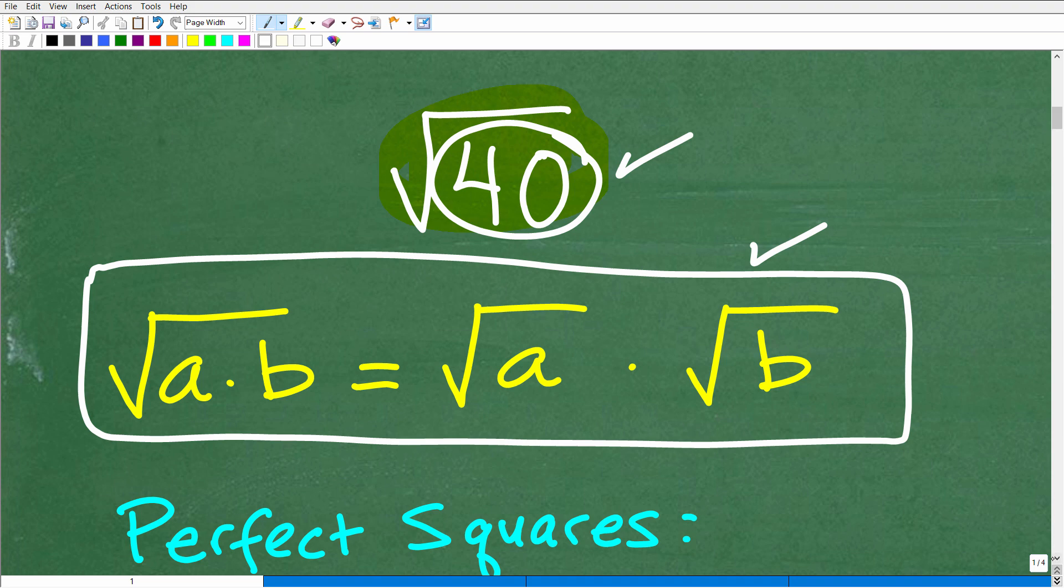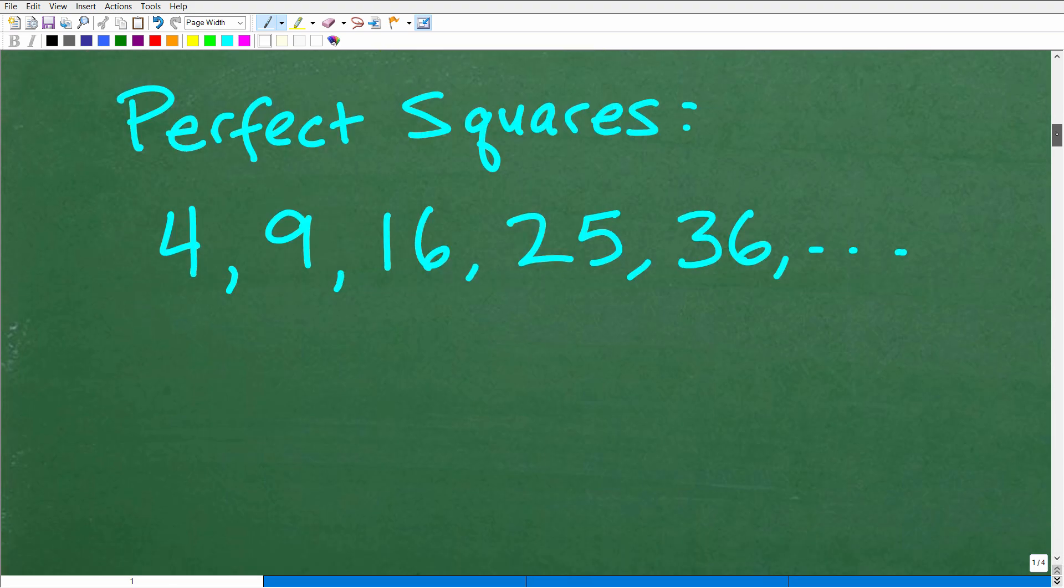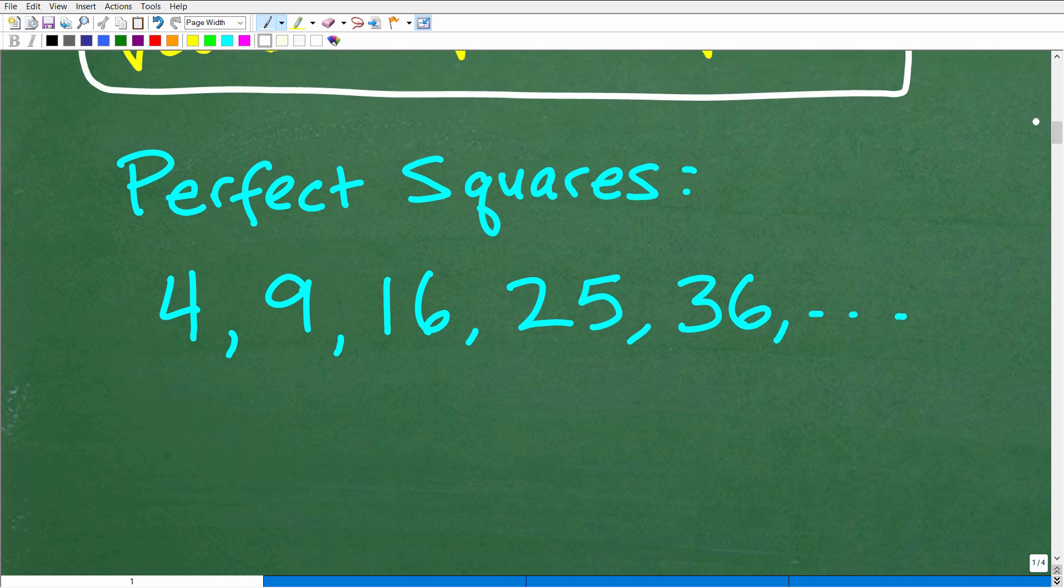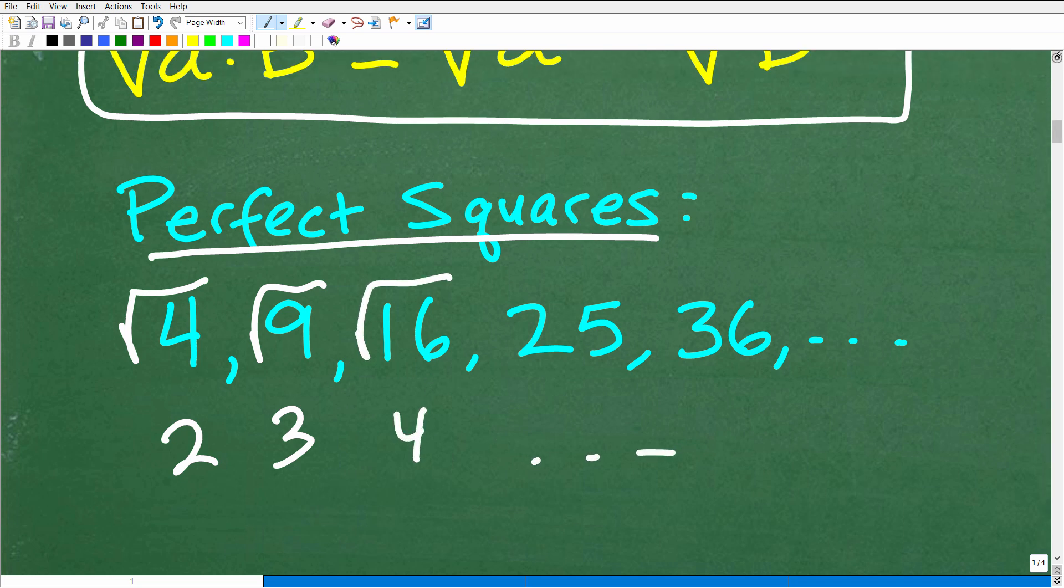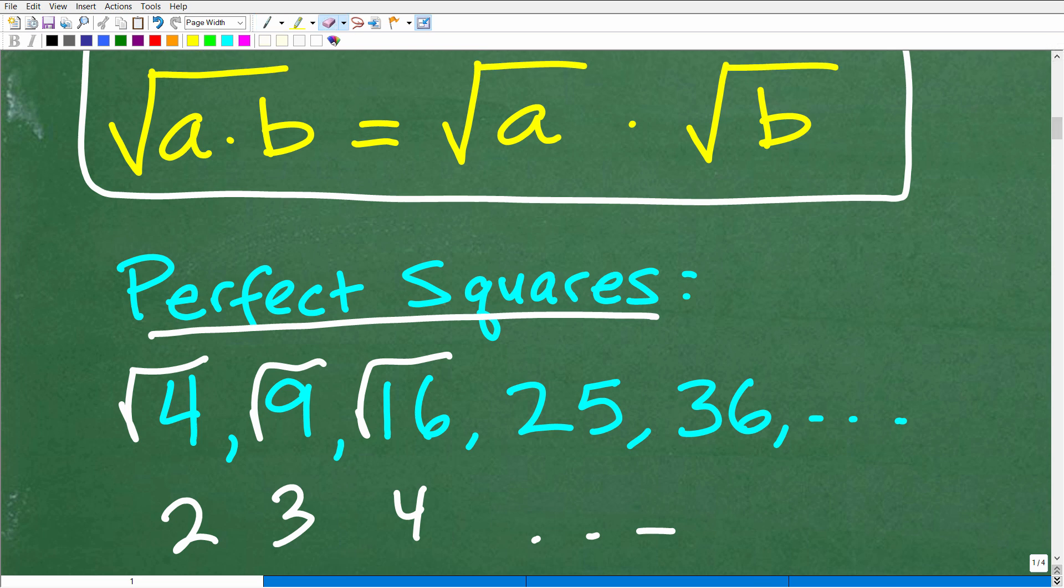Now, the second thing you need to be aware of is something called perfect square factors. So what are perfect squares? Well, here are some right here. So 4, 9, 16, 25, 36, these types of numbers are called perfect squares because when we take the square root of these numbers, like the square root of 4, we get these lovely, perfect, nice little whole numbers. So the square root of 4 is 2, square root of 9 is 3, square root of 16 is 4, and so on.